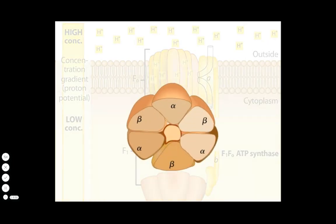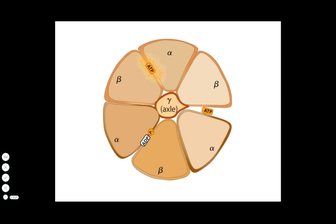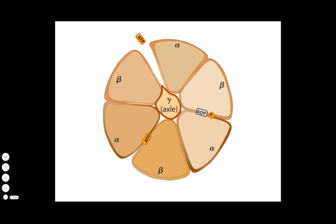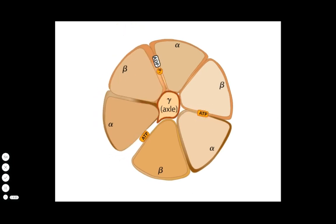However, the axle turning inside F1 causes F1 to change conformation, catalyzing the formation of ATP from ADP and inorganic phosphate. An ATP molecule is produced for every three protons that cross the membrane through the ATP synthase channel.